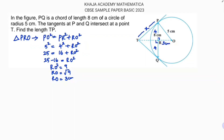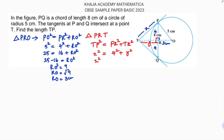Now I'll take triangle PRT. I'll consider TR as y. Applying the Pythagorean theorem to triangle PRT, the right angle is at R, so the hypotenuse is TP. Therefore TP² equals PR² plus TR², giving x² equals 4² plus y², which is x² equals 16 plus y². I'll leave this as equation one.